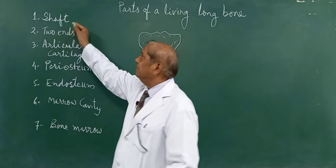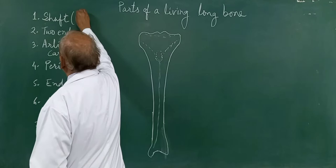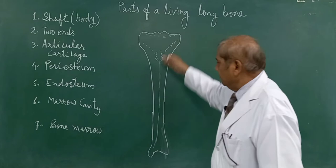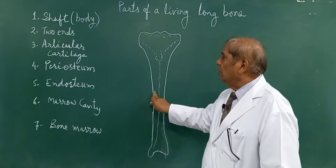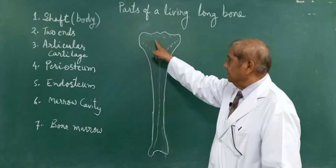It consists of the shaft or the body. There is a body present which is called as the shaft. This is the diagram of the tibia, which is an example of the long bone. And this is the body — centrally placed, the body.